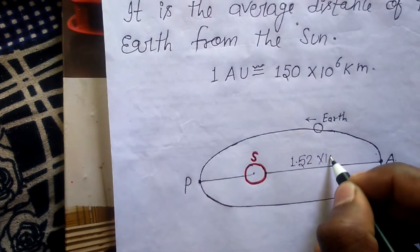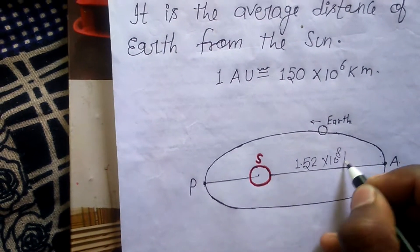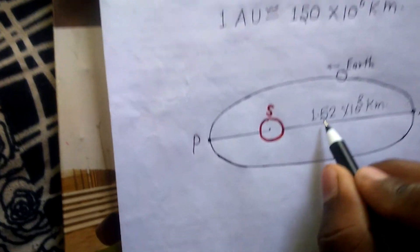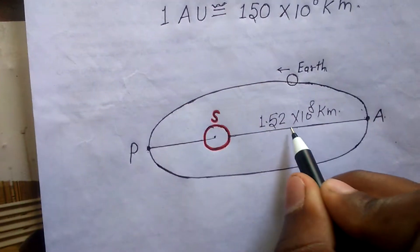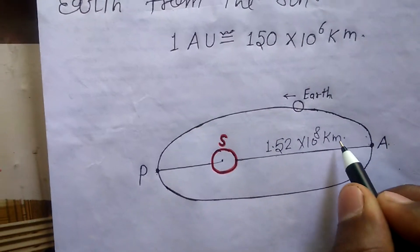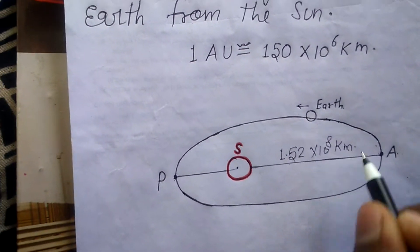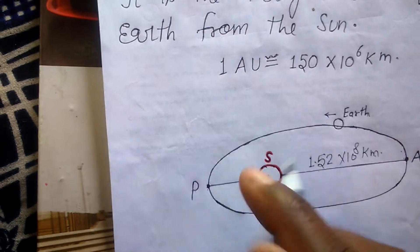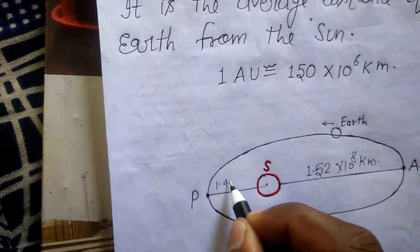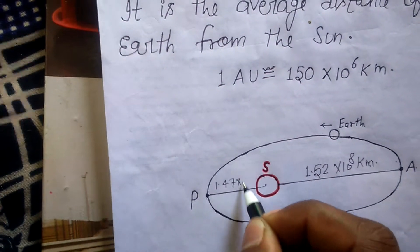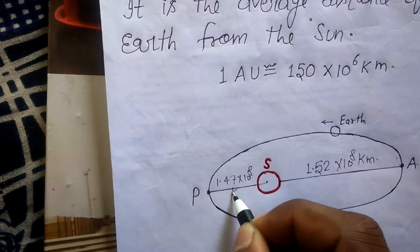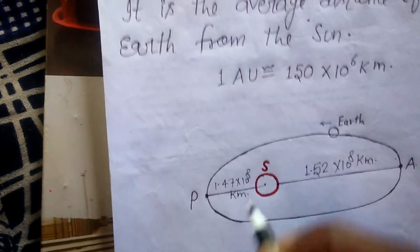The maximum distance at aphelion is 1.52 × 10⁸ kilometers, and the minimum distance at perihelion is 1.47 × 10⁸ kilometers.